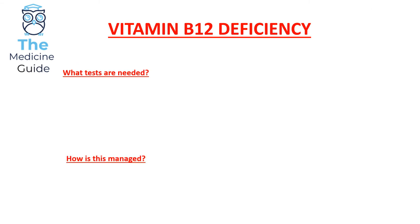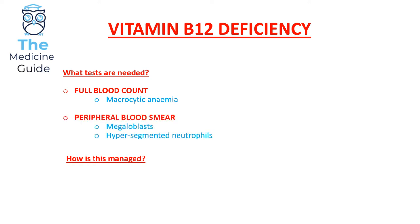In terms of tests, we need to perform a full blood count to confirm the presence of macrocytic anaemia. Then we need to perform a peripheral blood smear, which confirms the presence of megaloblasts as well as hypersegmented neutrophils. If you have a megaloblastic macrocytic anaemia, the two possible causes are either a vitamin B12 deficiency or a folate deficiency.